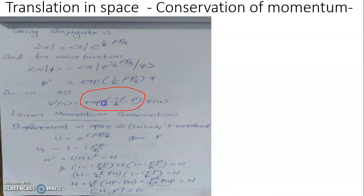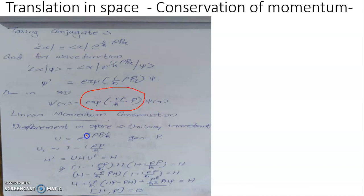This transformation happens to be a symmetry transformation. So displacement in space is attributed to the continuous unitary transformation of the system by means of the unitary operator U = e raised to iρp/ħ, with the generator of this unitary operator being linear momentum p. In an infinitesimally small case, U can be taken as identity minus iρp/ħ, which is the series expansion for e raised to ix with higher-order terms neglected.